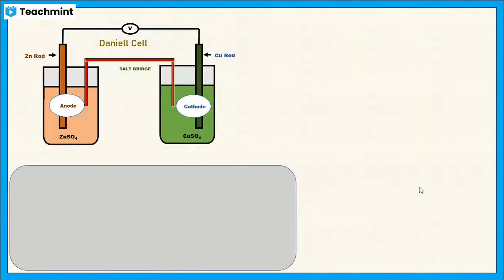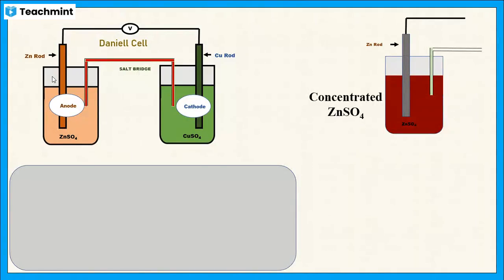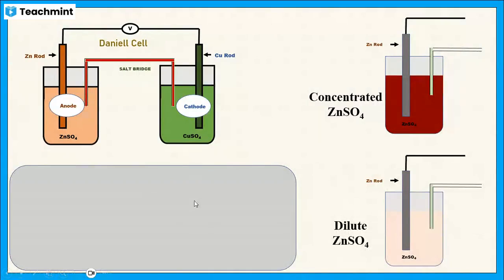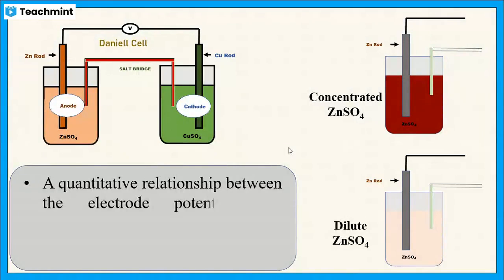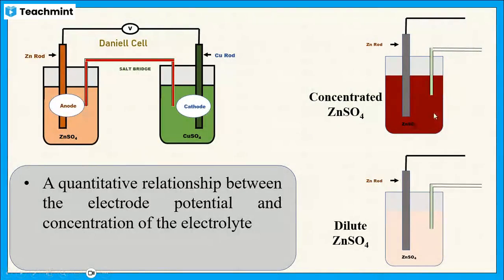During the Daniel cell operation, we can observe two cases at the anode. Zinc converts to its Zn²⁺ ion form — that is, dissolution of the zinc electrode takes place. When the concentration of zinc sulfate solution is high, dissolution is difficult, but when the concentration is low (dilute solution), dissolution is easier. This shows there is a quantitative relationship between electrode potential and the concentration of the electrolyte, which was derived by Nernst.